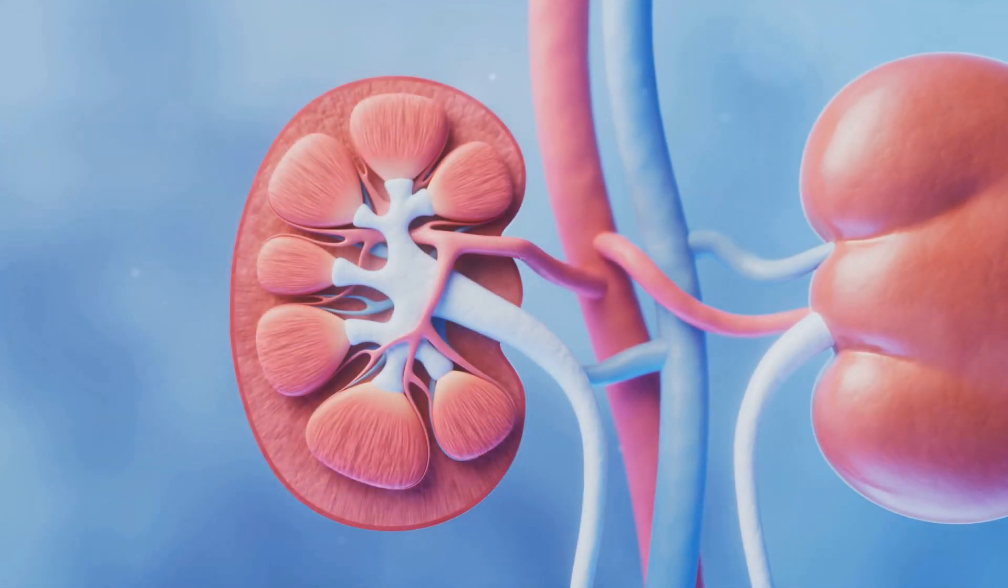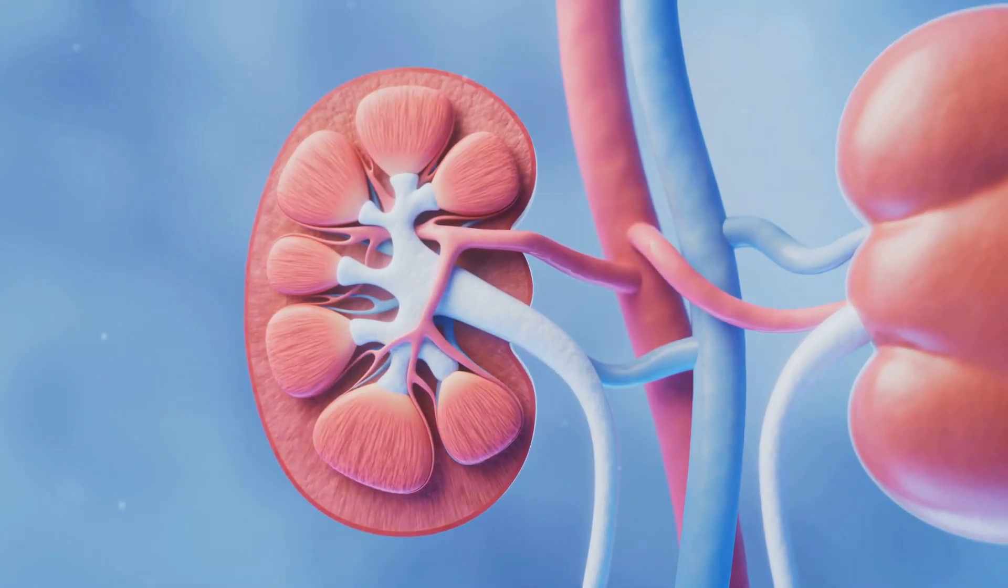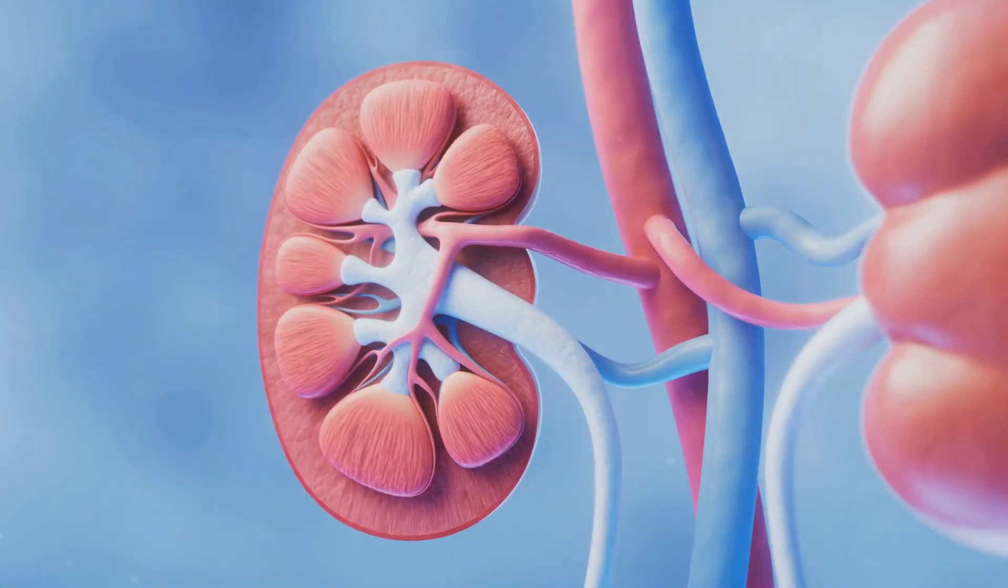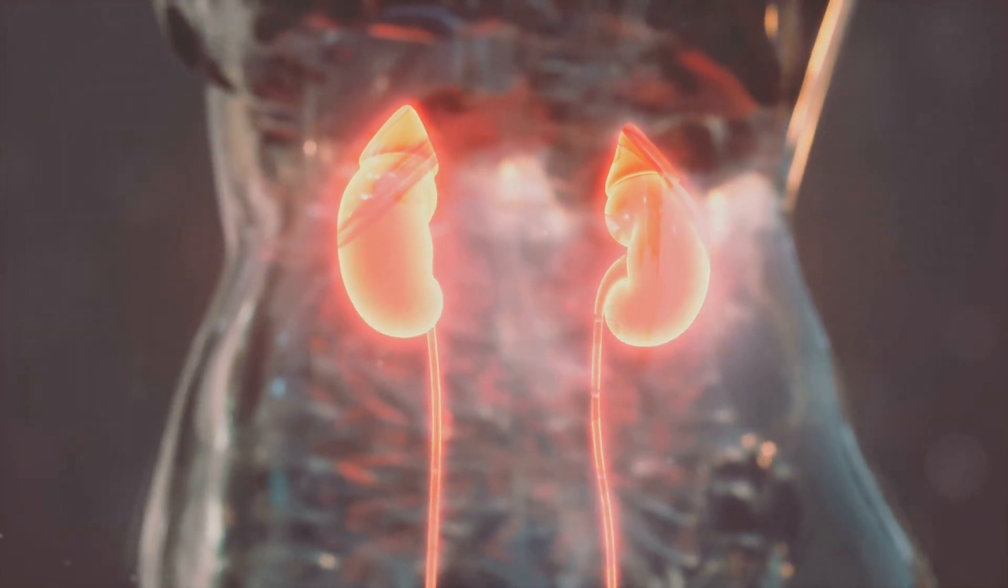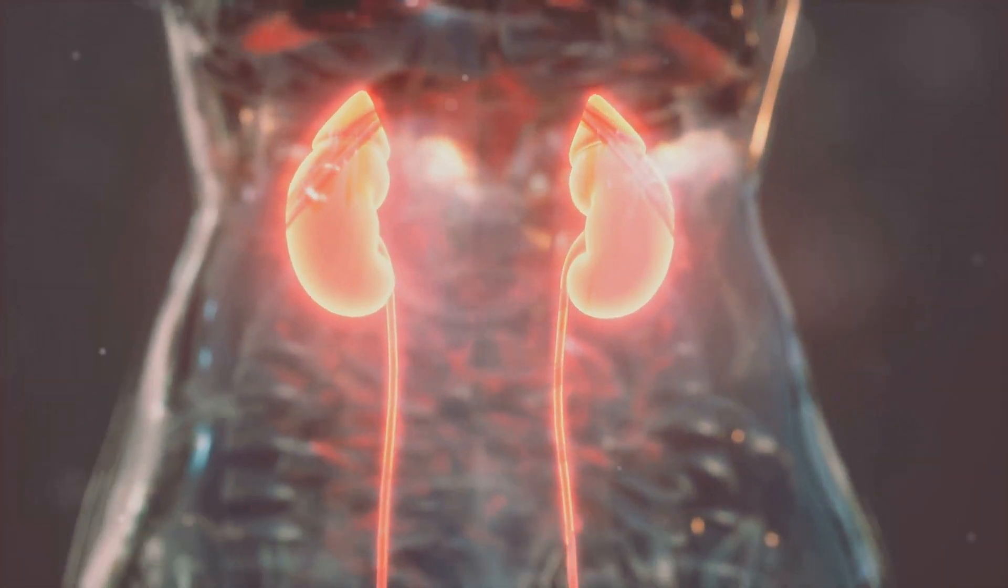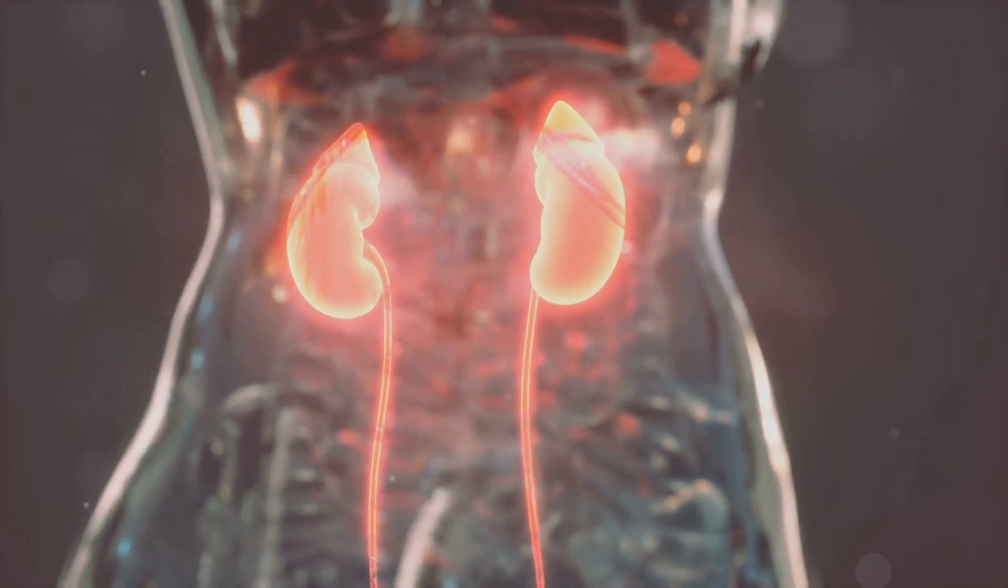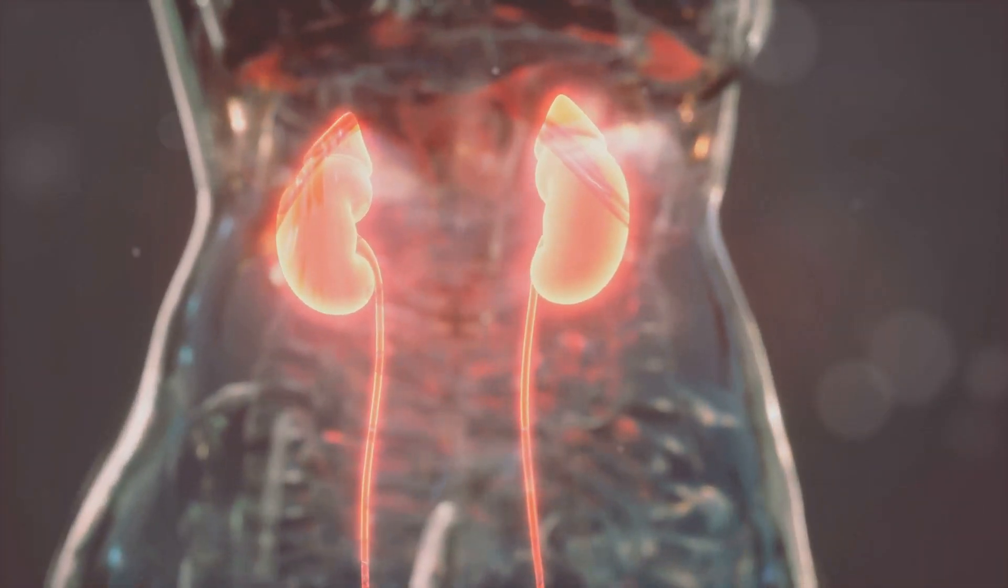each one containing about a million tiny filtering units called nephrons. These nephrons filter about 50 gallons of blood every day, producing about 1 to 2 quarts of urine. And you thought your job was tough.